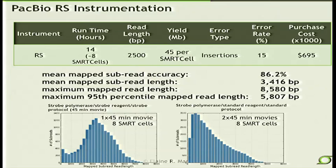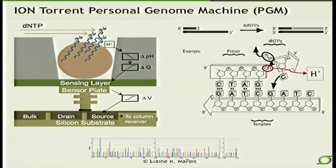That all sounds great, but because of the sensitivity of single-molecule sequencing to errors, the error rate on this is still quite high — about 15%, meaning 15 out of 100 bases are incorrect. Most of those errors, confoundingly, are actually insertion errors. This makes alignment of the reads difficult back to a known template or genome reference, and it also complicates the ability to assemble these reads.